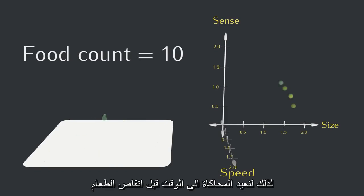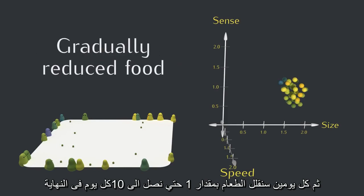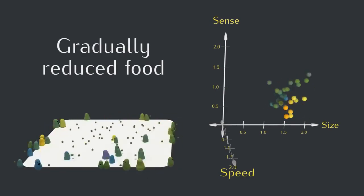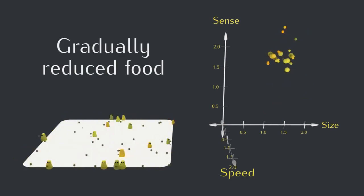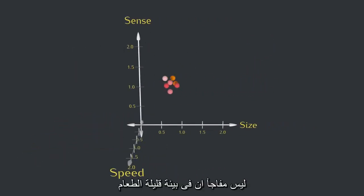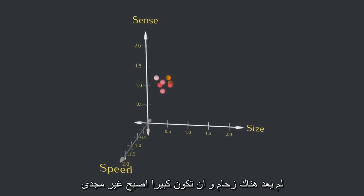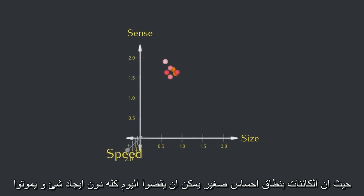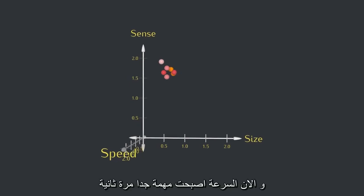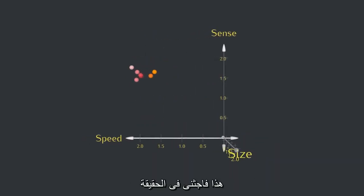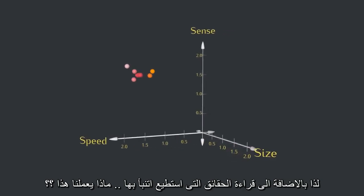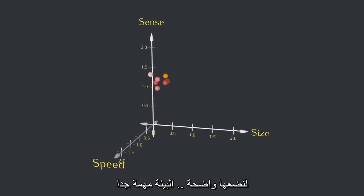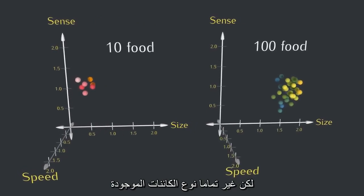So instead, let's rewind to before we reduce the food, and then every two days we'll put out one less piece of food until eventually we're only putting out 10 pieces of food each day. Alright. So it's not too surprising that in a lower food environment, things aren't as crowded and being big just isn't worth it anymore. Sense, on the other hand, became super valuable now that a low sense creature can easily go a whole day without seeing anything and die. And now speed is actually really valuable again. This surprised me — I thought in this sparse environment that efficiency would be king, making both size and speed go down, but apparently speed is actually more valuable now.